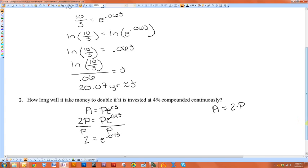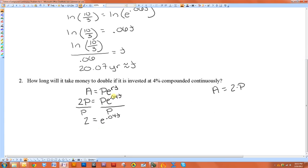So if you're ever looking for something to double, just drop the P and make it a 2. If we were talking about triple, you'd do 3 equals E to the RT. I want to get that T by itself, so I'm going to take the natural log of both sides.